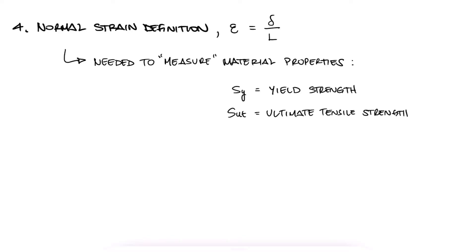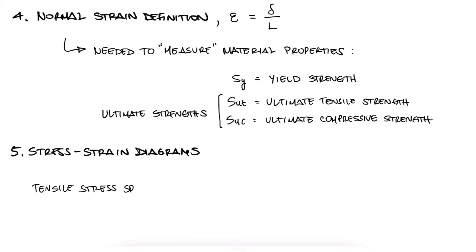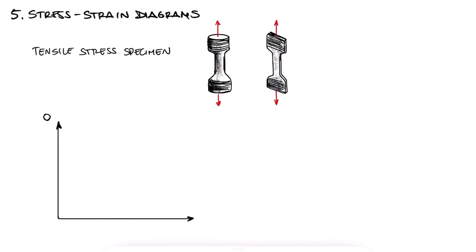Specifically for purely normal stresses, these main properties are the yield strength and the ultimate strength. When a tensile stress specimen, which can either have a round cross-section and threaded shoulders, or be flat and have serrated grips, is subjected to a tensile stress, which is positive, remember, we see that as the load, and therefore the stress increases, the deformation, and therefore the strain, increases with it.